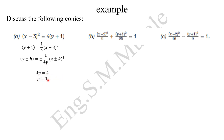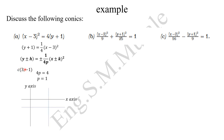If it were centered at the origin, p = 1 would directly give you the directrix and focal point. But because it's not centered at the origin, we need to calculate those from the new center. Setting x minus 3 equal to 0 gives x = 3, and setting y plus 1 equal to 0 gives y = -1. So the center is (3, -1). Since the coefficient is positive, the parabola is turning upwards.